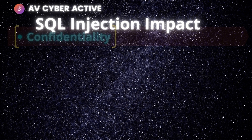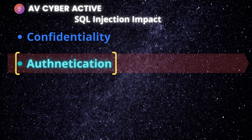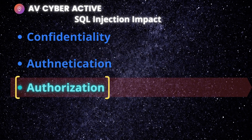How does SQL injection affect your business or security? First, it affects confidentiality — since SQL databases generally hold sensitive information, loss of confidentiality is a frequent problem. For authentication, if poor SQL commands are used to check usernames and passwords, it may be possible to connect to a system as another user with no prior knowledge of the password.